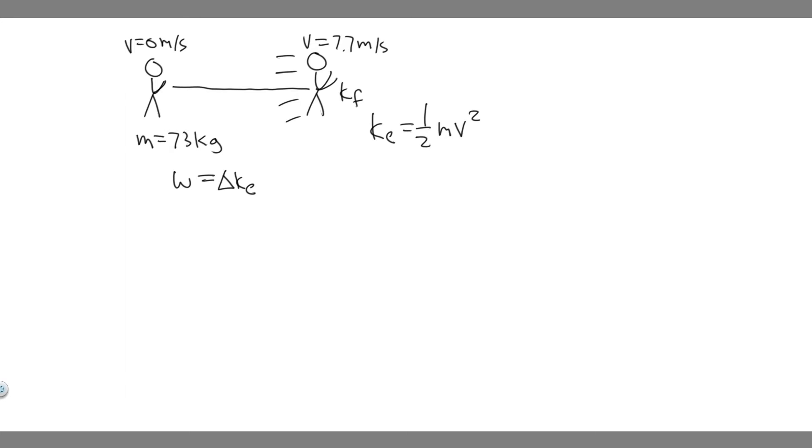So you could call it k final minus k initial. The final kinetic energy is 1/2 m v_f², because the mass isn't going to change—the mass is constant. So it's 1/2 m v_f² minus 1/2 m v_i². This is your final kinetic energy minus your initial, and that gives you the change in kinetic energy.